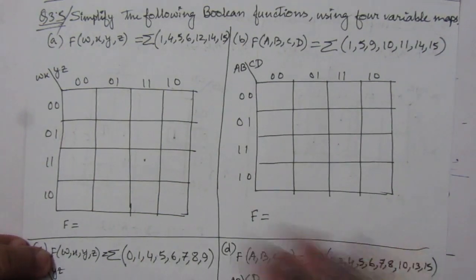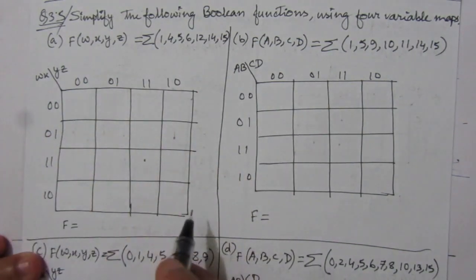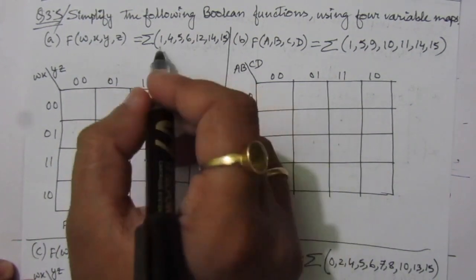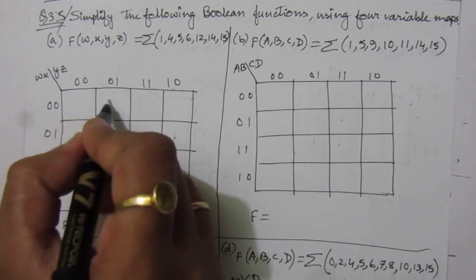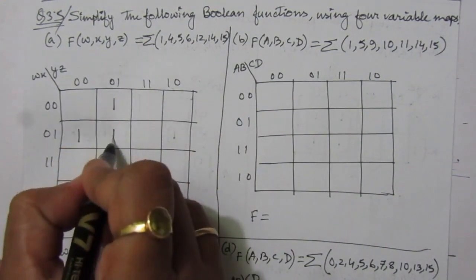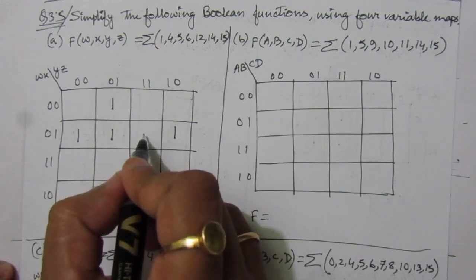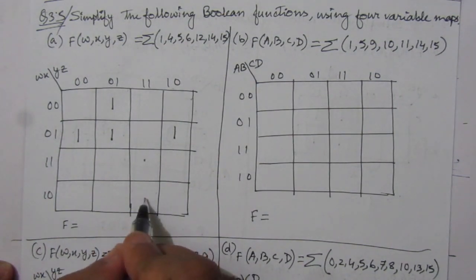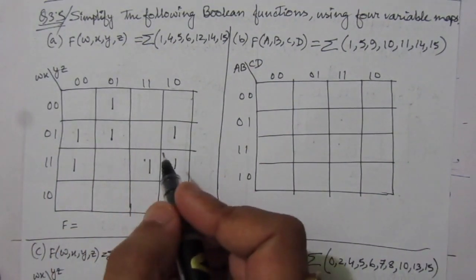In the first problem, we have four input variables w, x, y, and z. This is the Karnaugh map or four-variable map. We place one values for the given minterms: 0, 1, 2, 3, 4, 5, 6, 7, 8, 9, 10, 11, 12, 13, 14, 15 — filling in the map accordingly.